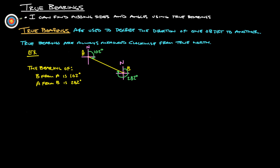The bearing of point B from point A would be 102 degrees. The bearing of A from point B, starting at point B, start here at true north, go clockwise around until you hit that travel line here, and that would be 282 degrees.